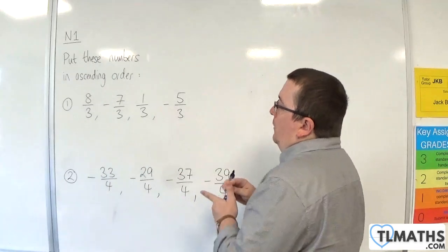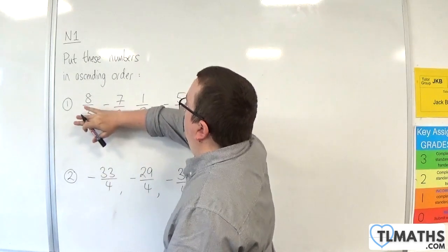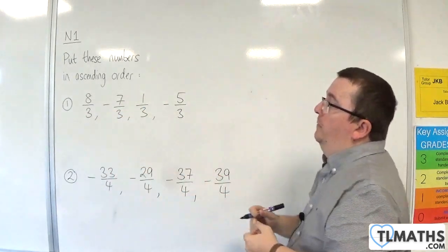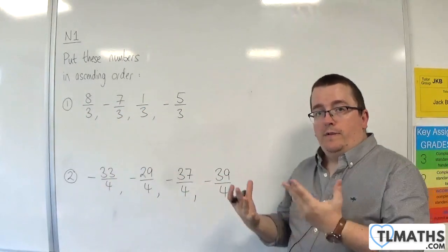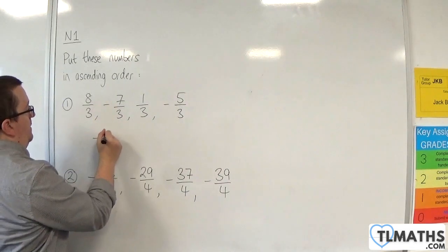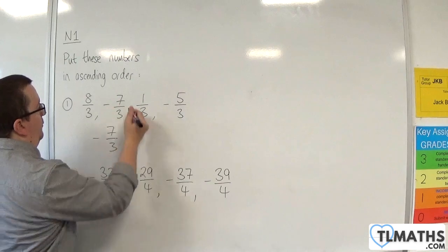So if we ignore the denominators, then we've got 8, minus 7, 1, and minus 5. So the most negative of those would have to come first, which is the minus 7 over 3. So that's the smallest.